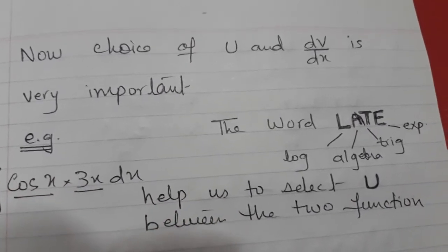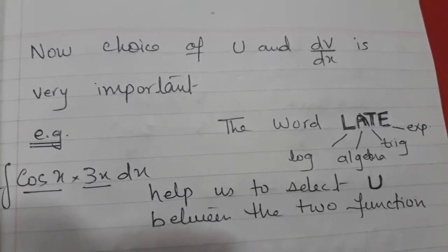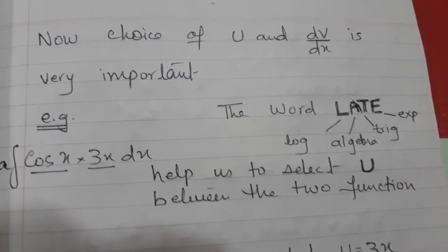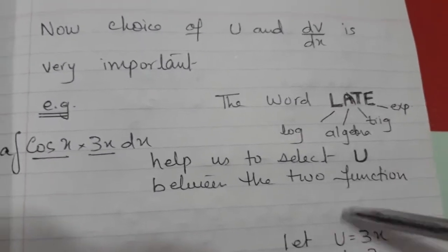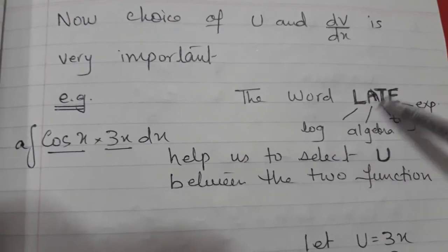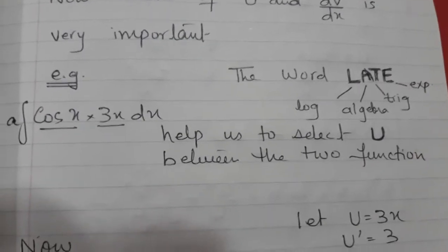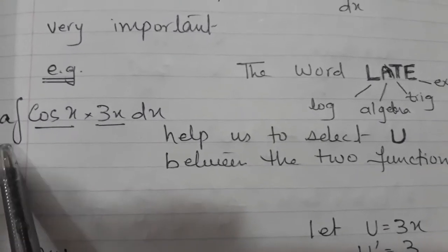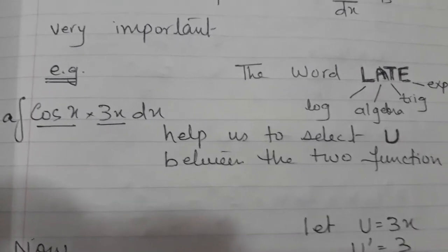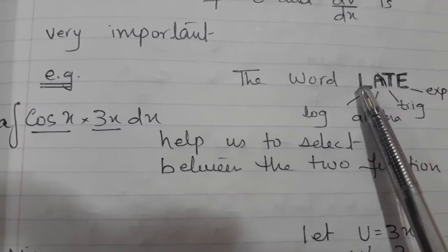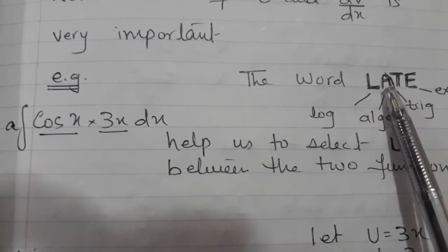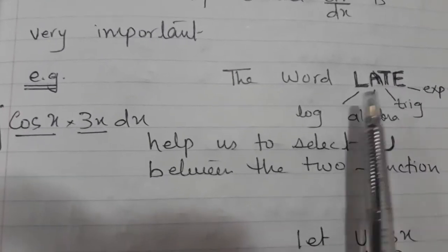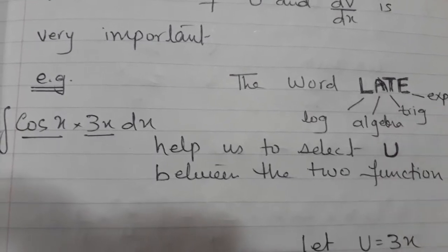There is a word LATE — I don't know who came up with this idea, but it is very helpful for a student. The word LATE helps a student figure out which one should be taken as u. L stands for Log, A for Algebra, T for Trig, E for Exponential. Between the two functions given in the integration, you come here and see which one appears first in LATE. So this is actually prioritizing the selection of u.